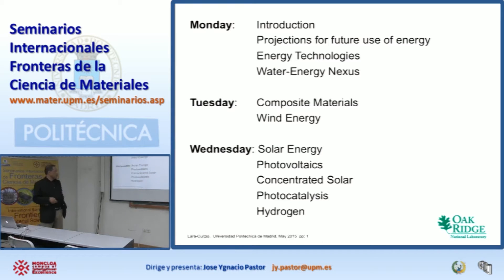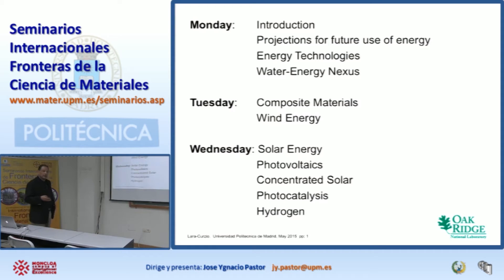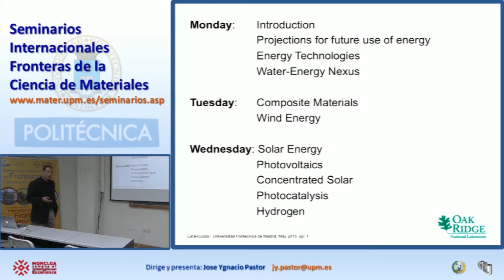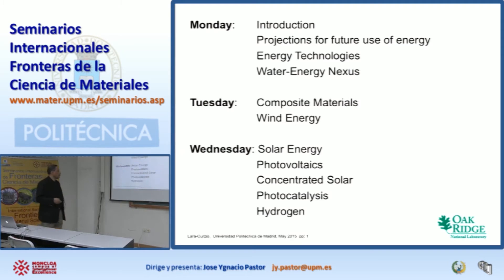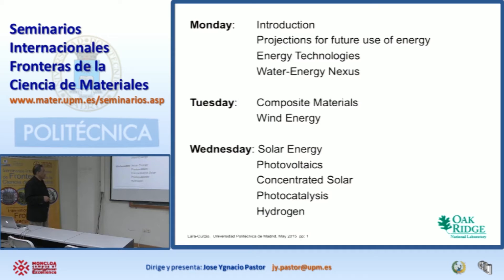Some challenges with concentrated solar include what happens when the sun goes away or clouds appear. We talked about the use of molten salts as a way to store energy. Whenever you use molten salts, you have to be aware of corrosion issues — you must make sure the alloys selected for tubes or containers are compatible with the salts. We talked about stresses coming from temperature gradients. We also talked about photocatalysis, which is a way to generate hydrogen utilizing solar irradiation in certain materials.